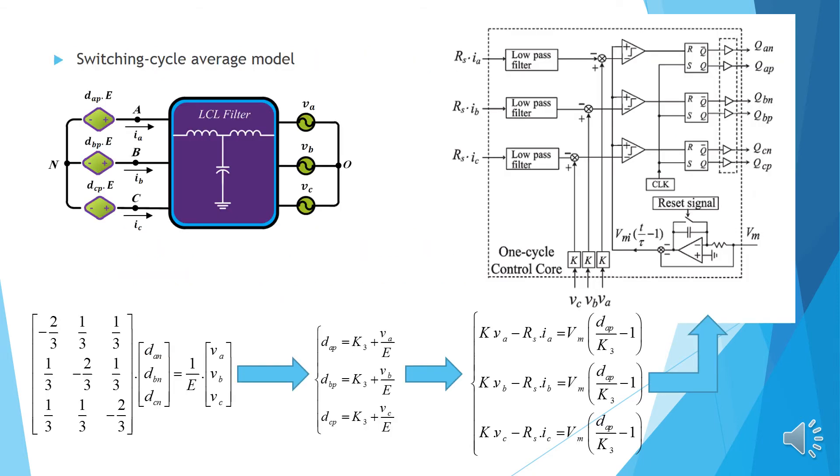According to reference 13, switching cycle average model is extracted as this figure. The detailed equation on the left shows the relationship between input and output voltage. According to the description of the paper, finally the equation on the right is obtained from equation on the left. Also values of parameters are mentioned in the paper. Implementation of the OCC circuit is shown as the right figure.